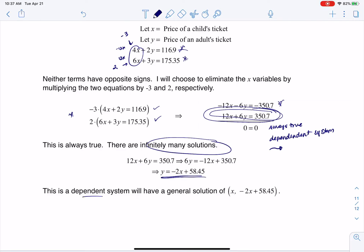So I have my dependent system, and whatever you decide the price of that child's ticket is, if you have the adult ticket be the expression negative 2X plus 58.45, you're going to get a solution to your system. All right, thanks so much, bye.